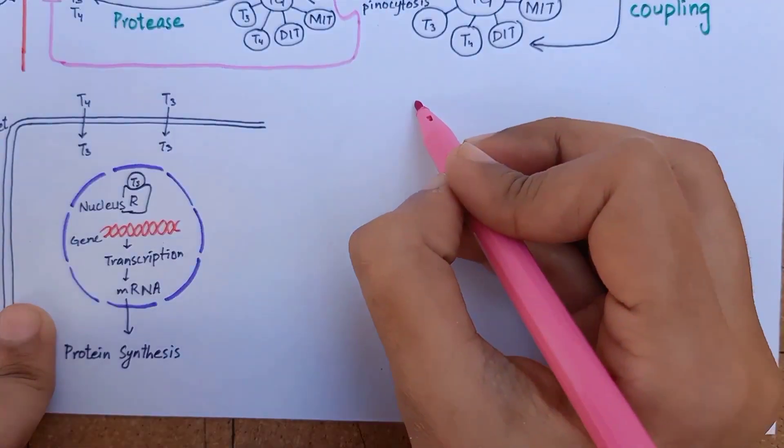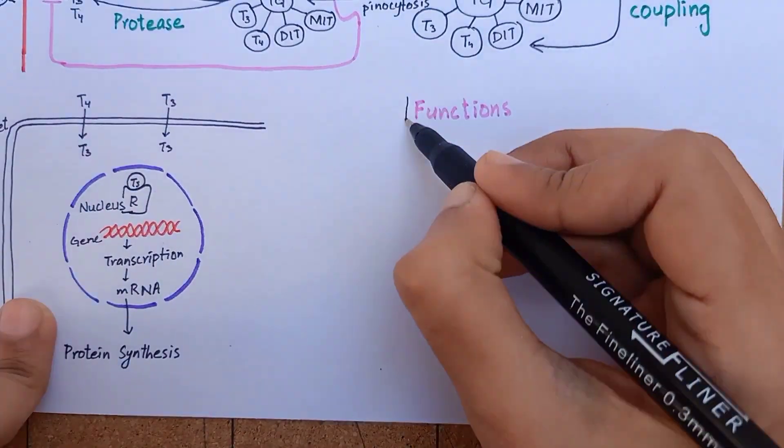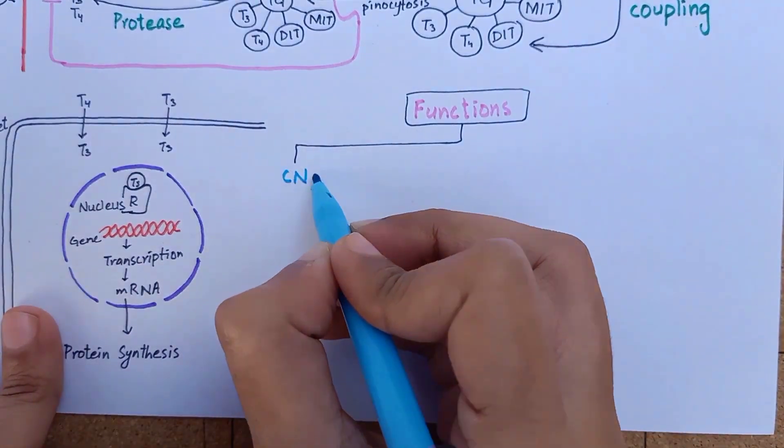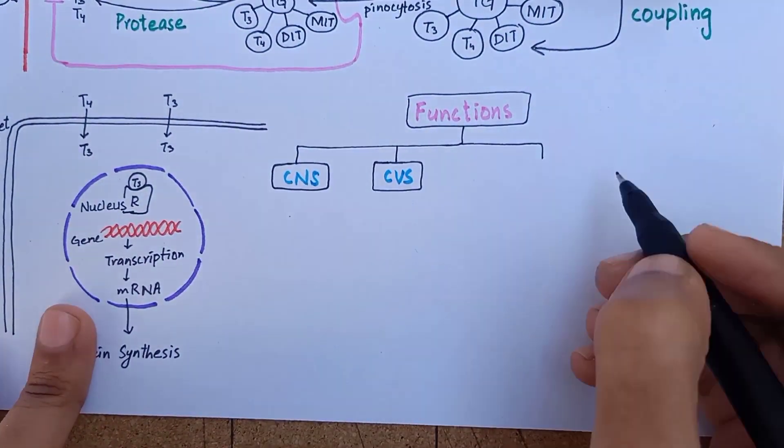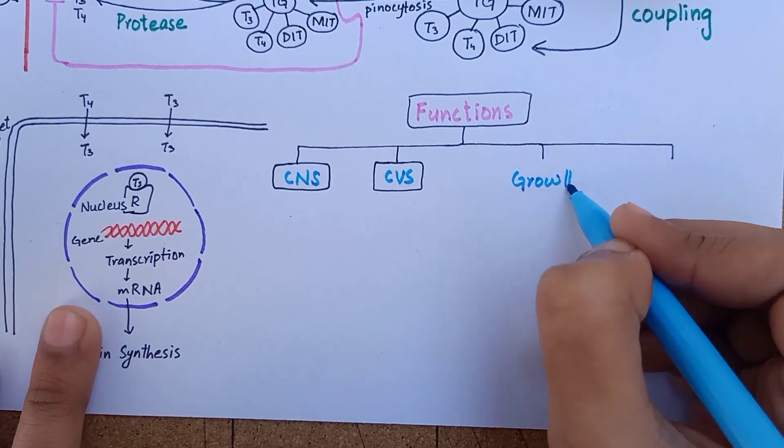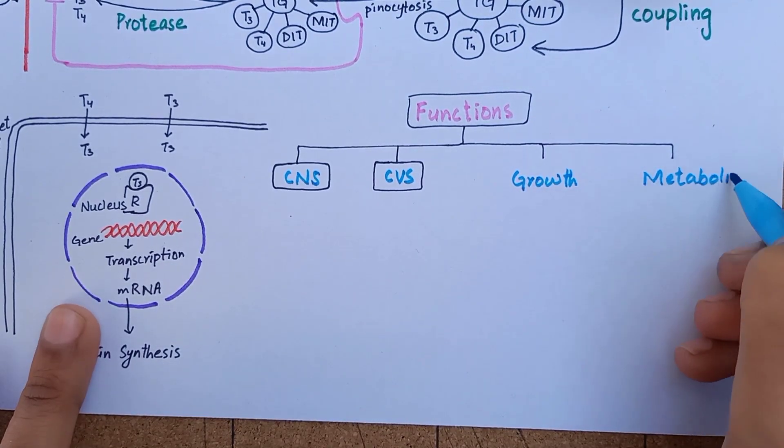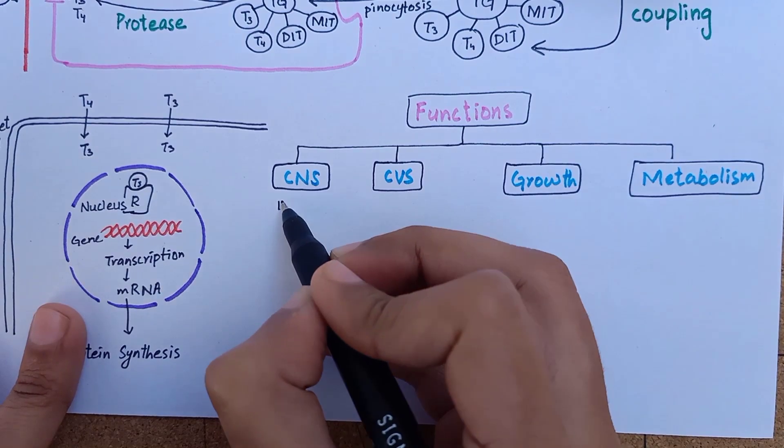By increasing the metabolism, thyroid hormone can have various effects on our body depending upon the type of target organs on which it is working. For example, in the central nervous system, it causes increased brain maturation.